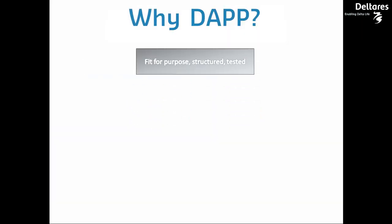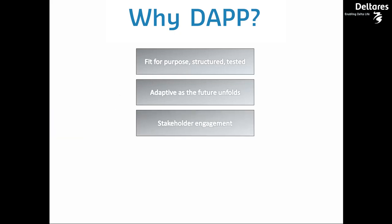DAP is fit for purpose, meaning it can be tailored to the data and resources available, and can be as qualitative or quantitative as needed. It is structured and tested, which means you can rely on the process and the outputs. It is adaptive — we don't know how the future will unfold, but the pathways approach is robust under uncertainty. Stakeholder engagement is built into the method, from the inception of the objectives to the decision about which measures to consider, to the final pathway selection. Finally, DAP facilitates communication with the public. While the metro map infographic is based on complex assessments, the graphic itself is intuitive and easily understood by anyone. It provides transparency and clarity of decisions and helps with public buy-in.